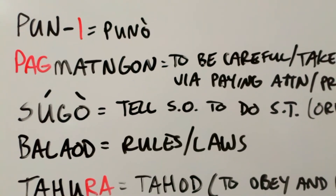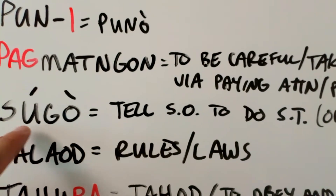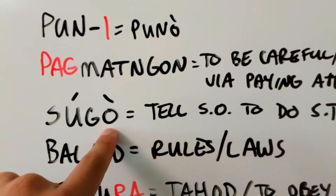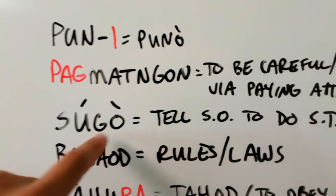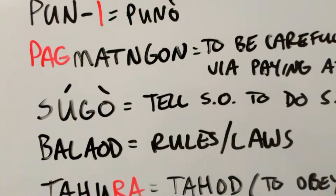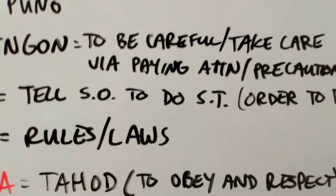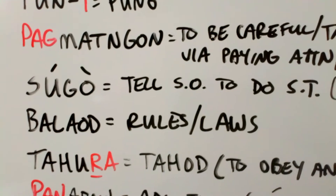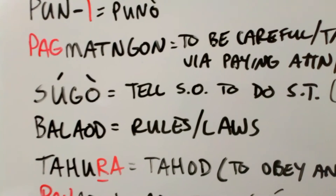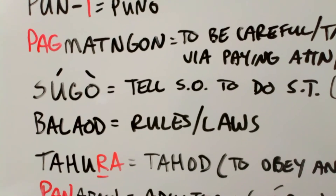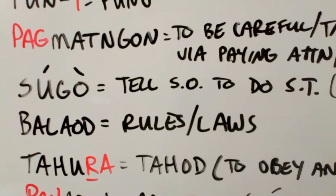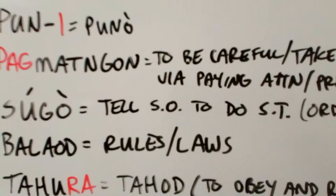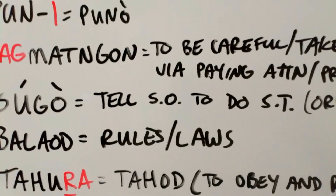The next word we have is sugo. Remember, the acute accent makes the stress go on that first syllable with the first vowel, while the grave accent makes the last vowel hold the glottal stop. Sugo is to tell someone to do something or to order someone to do something. The example for this one is like the Ten Commandments — ang napulo kasugo sa Diyos — the Ten Commandments of God. They're just things that you need to follow and things that someone is telling you to do. In this case, it's going to be God. Sugo — things that you just need to follow.